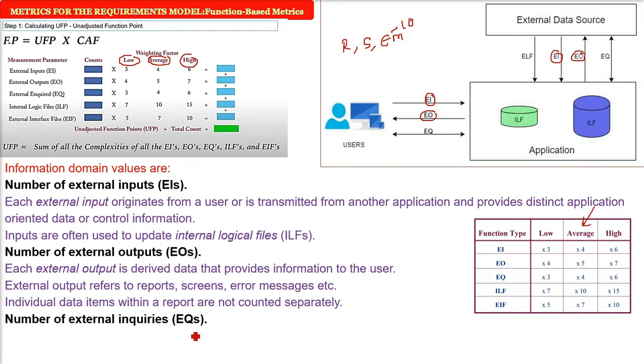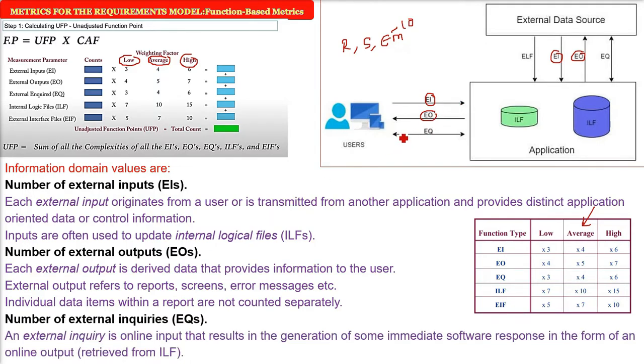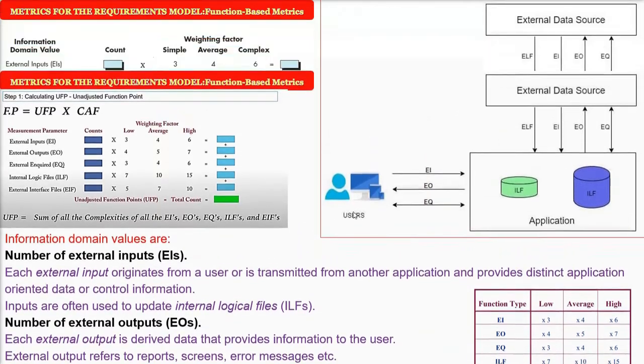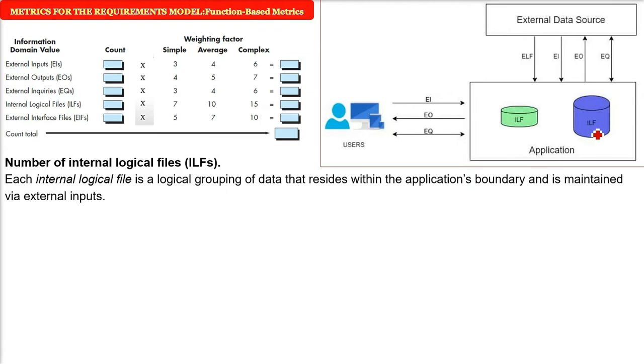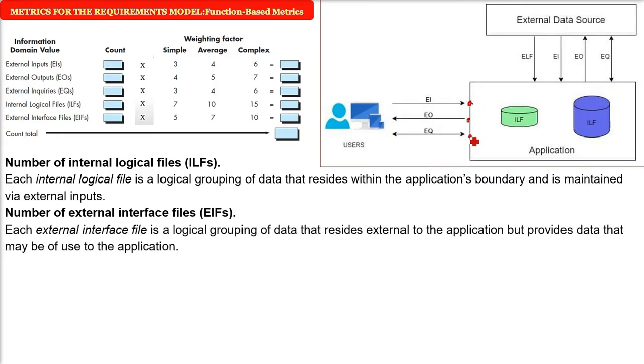If you have 10 error messages, you will only compute one. Number of external inquiries EQs. This external inquiry is the input which gives you a software response as an output which is actually coming from the ILF. What is ILF? Number of internal logical files. Each internal logical file is a logical grouping of data that resides within the application boundary and is maintained via the external inputs. What are external interface files or EIFs? Each external interface file is a logical grouping of data that resides external to the application but provides data that may be of use to the application.